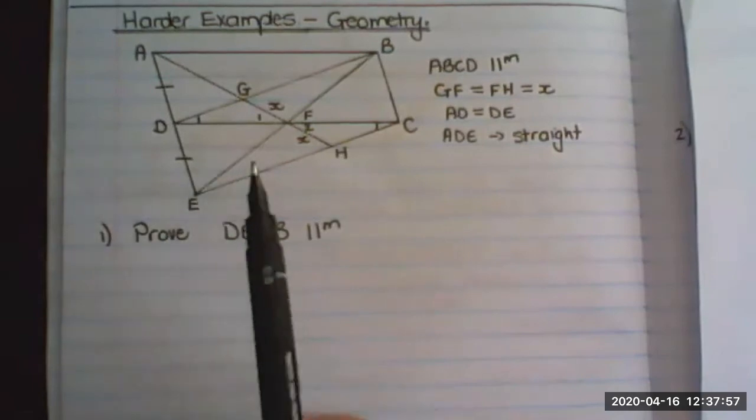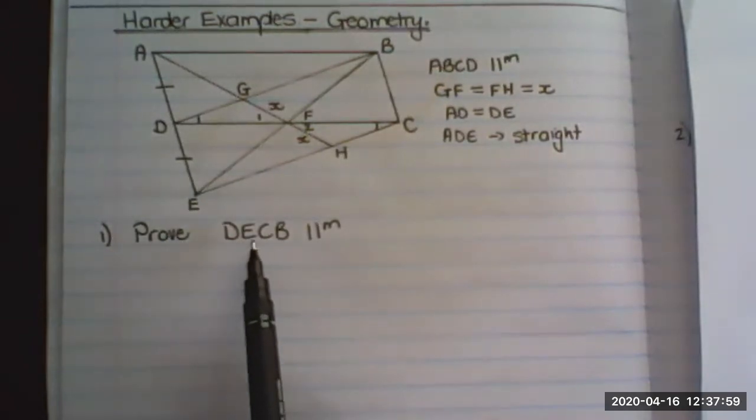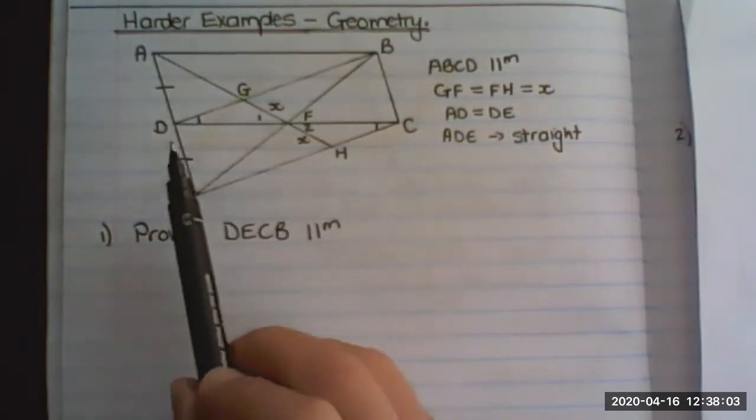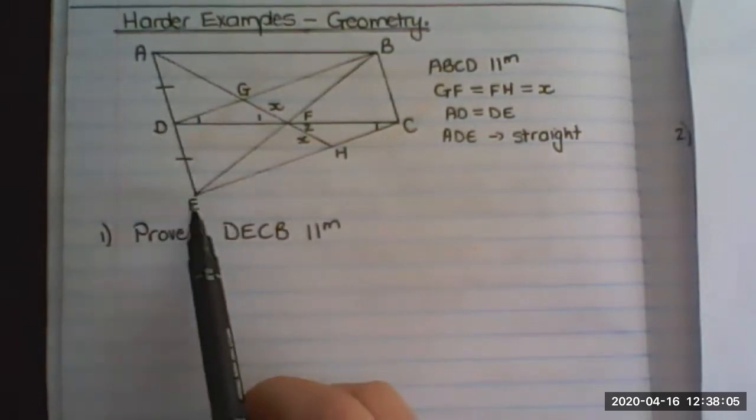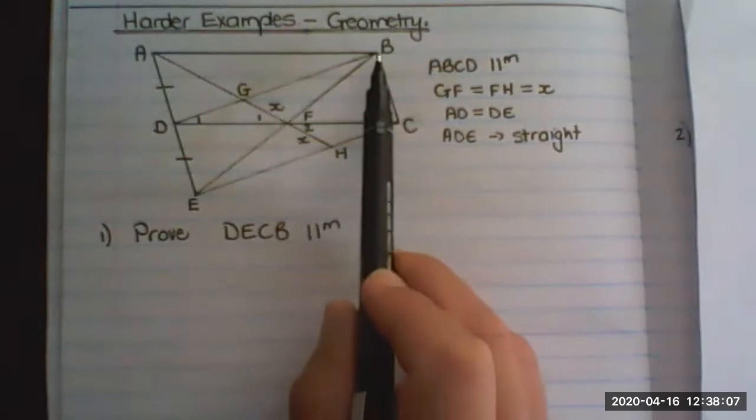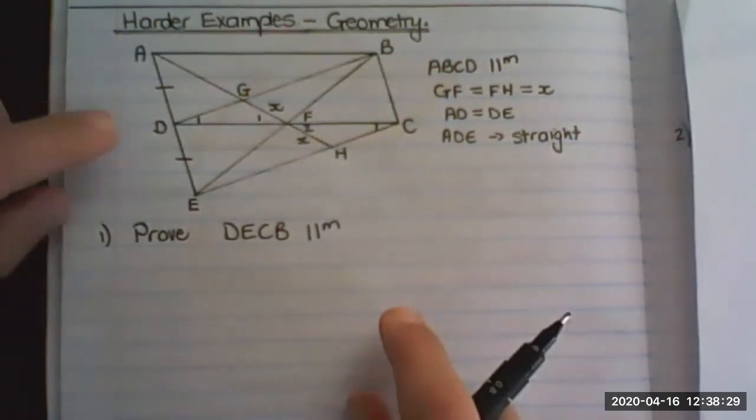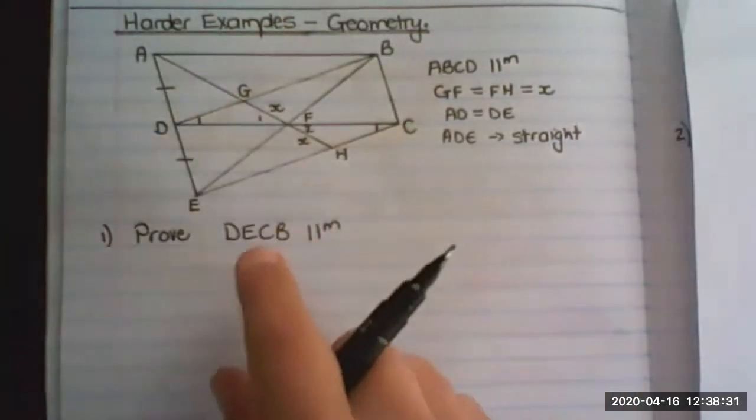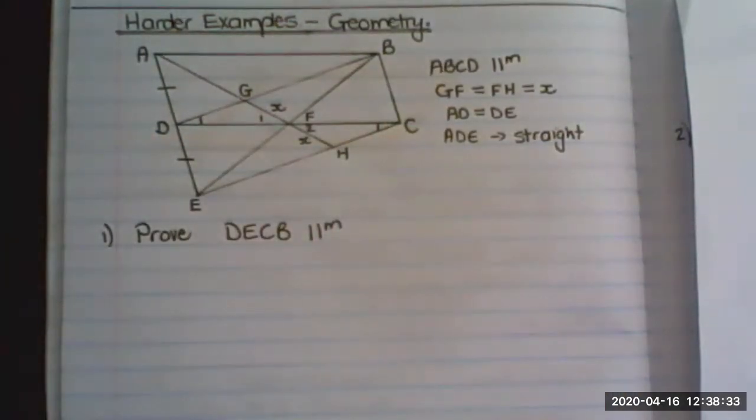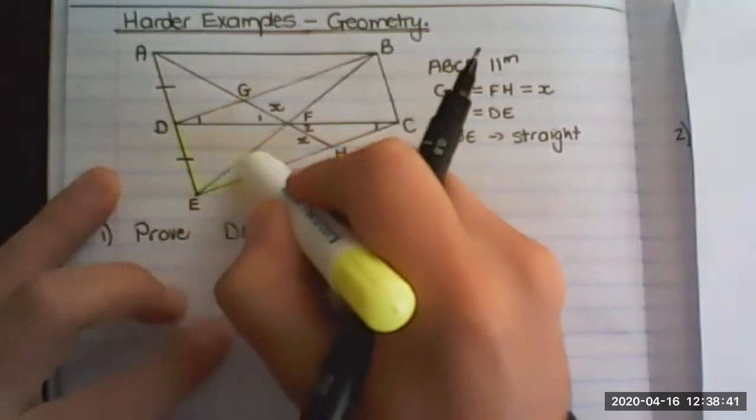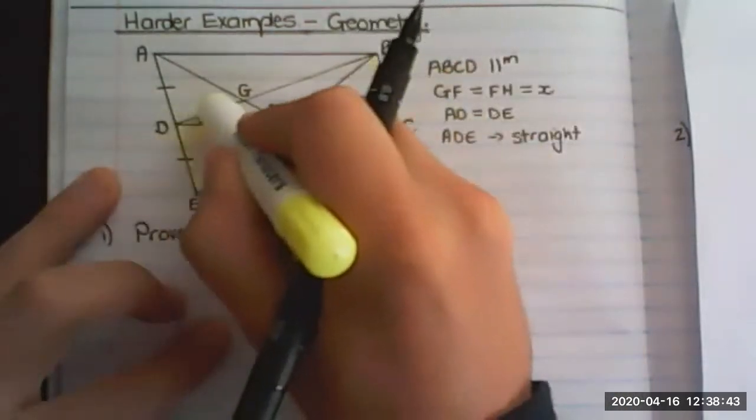The first question is prove that DECB is a parallelogram. So this is D, E, C, and B. The first thing in solving this diagram, I think it's important to highlight it so you can actually see what is happening. I'm just highlighting DECB.